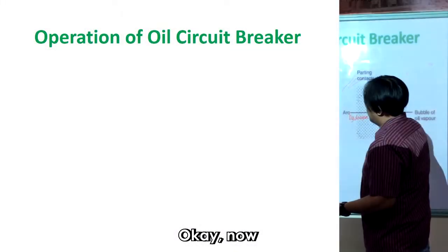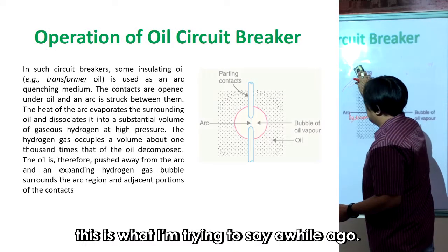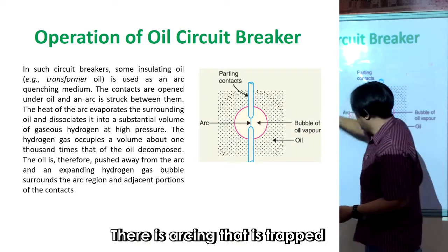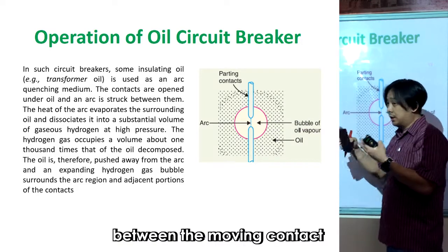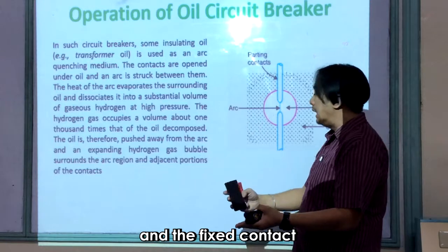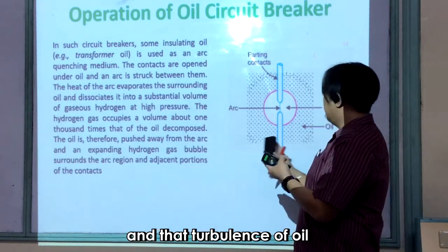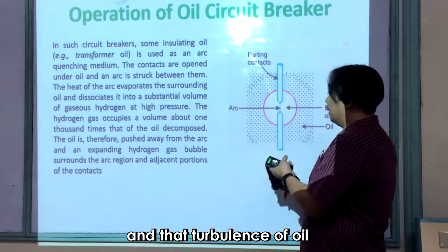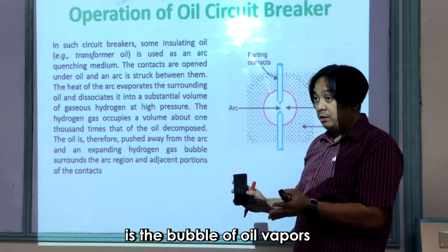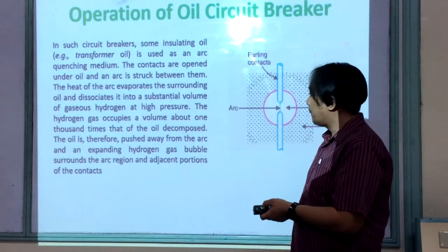The arcing is trapped between the moving contact and the fixed contact. The turbulence of oil produces bubbles of oil vapors that go to the air cushions.